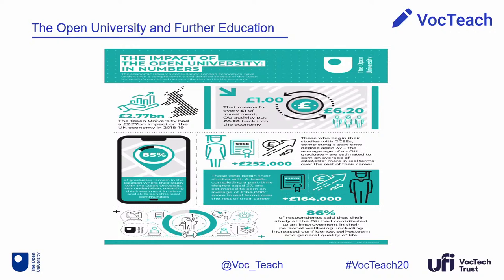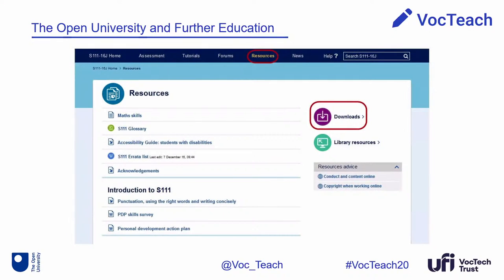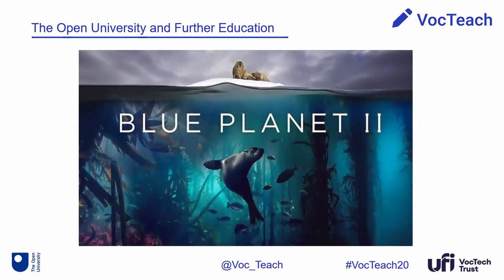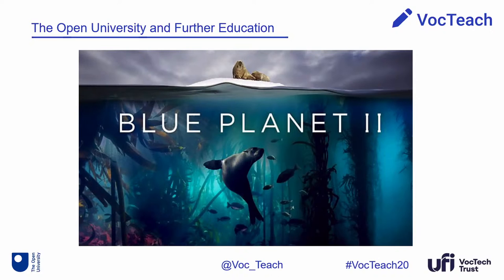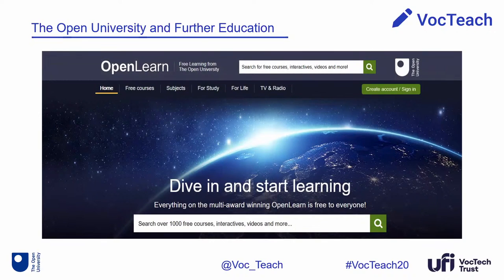The OU is very keen to work more with the FE sector. Some of the things we can bring are our resources — we've got huge experience in online learning and pedagogy and loads of module content. We also have great leverage through our relationship with the BBC. We have three to four hundred million views per year of OU BBC co-produced programmes covering science, history, technology, and all kinds of fascinating subjects. These are backed by our OpenLearn site, a free learning resources website which has had over 80 million visits since its launch.